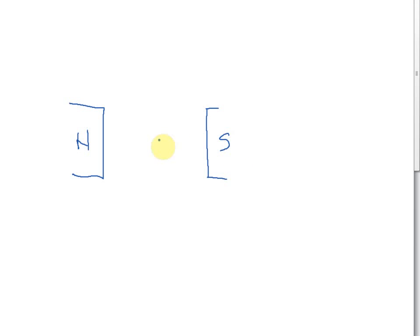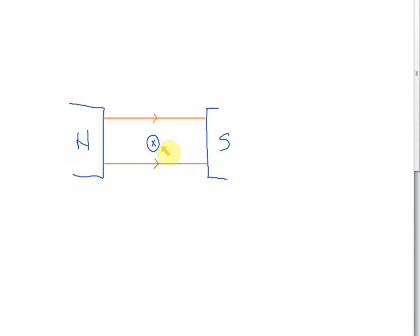This is a north pole and this is a south pole, and then we have a conductor. Let's use a cross symbol, which shows that the current is moving inside. For the magnetic field of the permanent magnet, the field moves from left to right — because the field always moves from the north pole to the south pole.